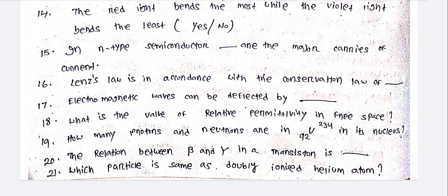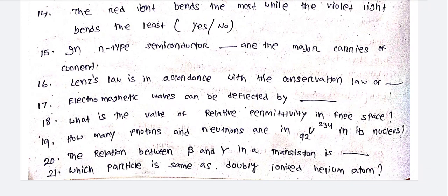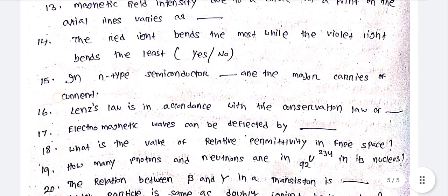What is the value of relative permittivity in free space? How many protons and neutrons are in U-92-234 in its nucleus? The relation between beta and gamma in a transistor is dash. Which particle is the same as a doubly ionized helium atom?